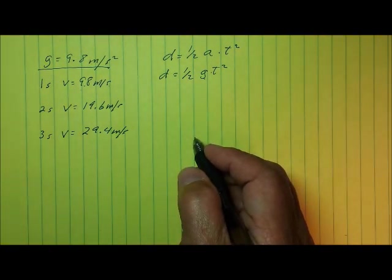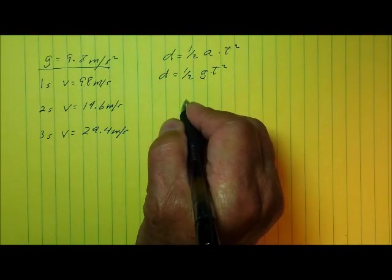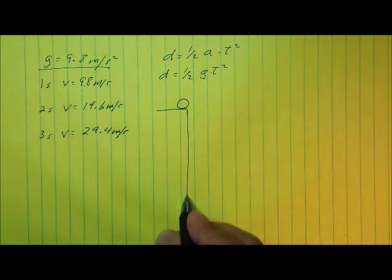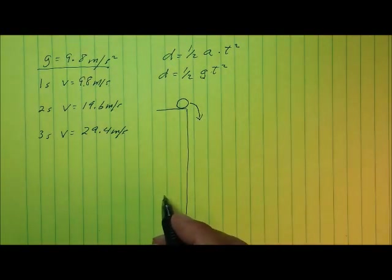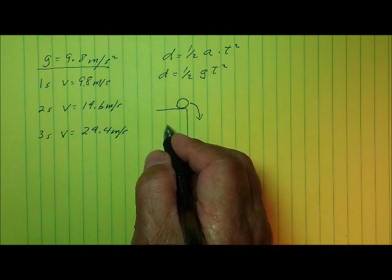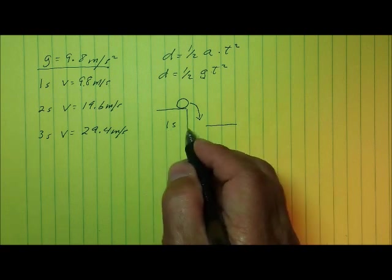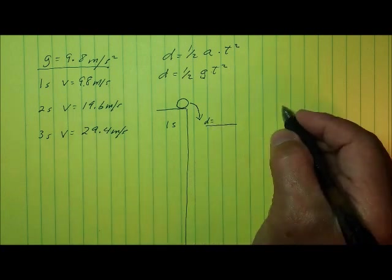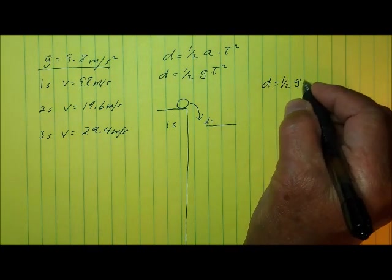So let's take a look at a simple situation. How would you use this equation? Let's suppose that we have this object, this ball, sitting up on top of a building and we're going to knock this object off the building and it's going to fall. The first thing that we can do is we can say, how far would this object fall after falling for one second? What distance will it have fallen after one second of falling? So let's go ahead and calculate that.